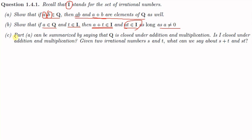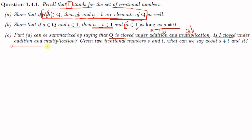Part c says that part a can be summarized by saying that Q is closed under addition and multiplication. Since if a and b are rational numbers then ab and a plus b are also rational numbers, we say Q is closed under addition and multiplication — because a plus b is an element of Q and ab is an element of Q. Now the question is: is I closed under addition and multiplication? So we have to check this property for I.